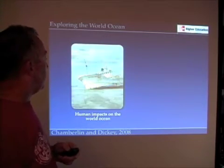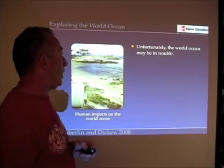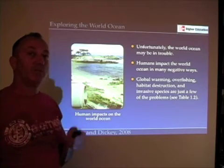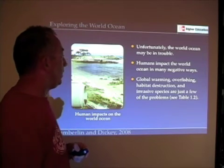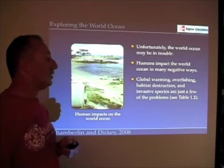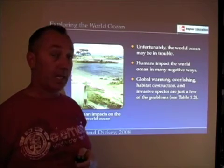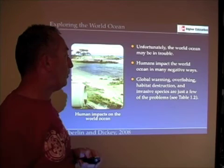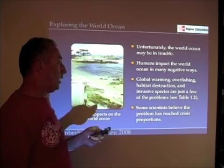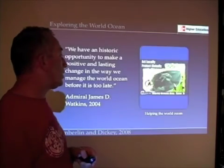The good always comes with the bad. Human impacts on the world ocean are unfortunately large, and the world ocean may be in trouble in many different ways that we're going to study this semester. Humans overfish the ocean. Global warming, which I consider to be the number one enemy of the ocean and humanity's survival, is a major concern. Habitat destruction, invasive species — all these things are impacting the ocean negatively. Table 1.2 covers these impacts, and some scientists actually believe that human impacts on the world ocean have reached crisis proportions.